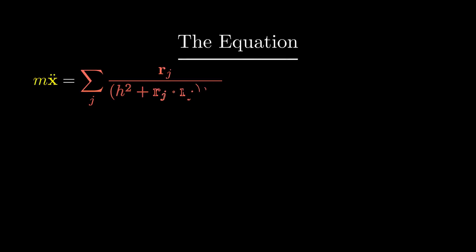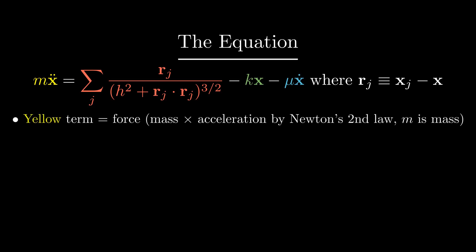This rather complicated looking equation is the Newtonian equation of motion describing how the bob, or the swinging part, of the pendulum moves. Put simply, this equation describes the total force acting on the pendulum bob, which is the same as mass times acceleration as per Newton's second law. Some simplifications have been made here to make these equations easier to understand and use.